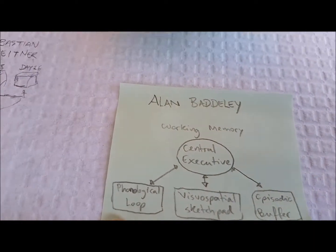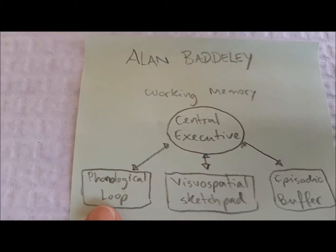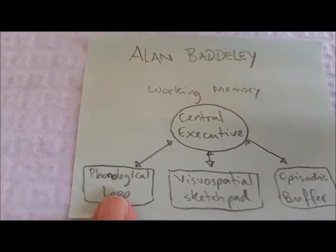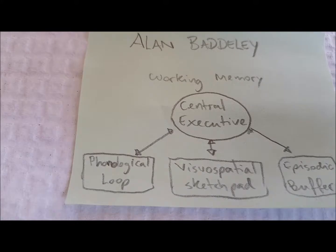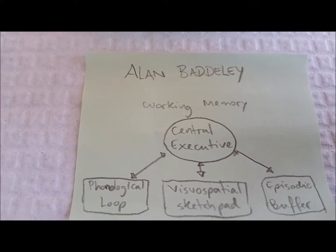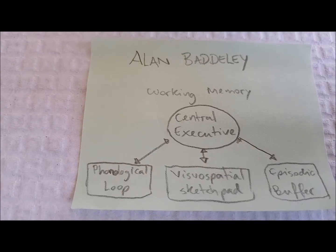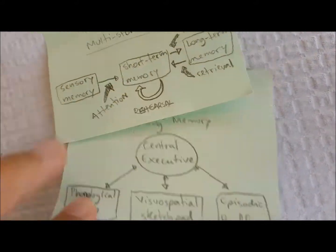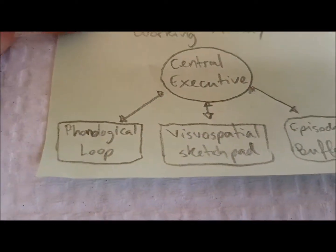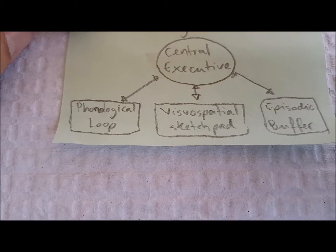So if you are trying to process something that involves two different things, that's actually what we know today as dual coding. If you are trying to encode information using two different processes, you're going to make it more memorable.